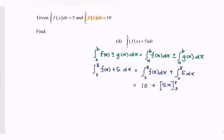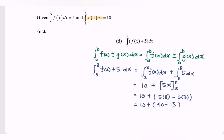Substituting the limits: we have 10 plus (5 times 8 minus 5 times 3). Simplifying: 10 plus (40 minus 15). Finally, the integral of f(x) plus 5 with respect to x for the limits 3 to 8 equals 35.